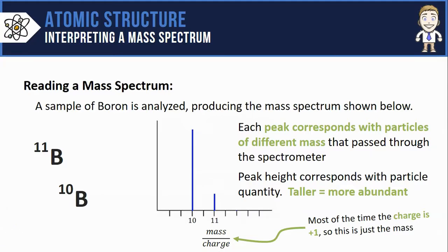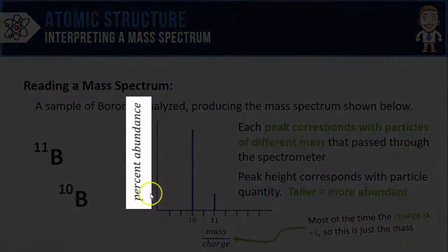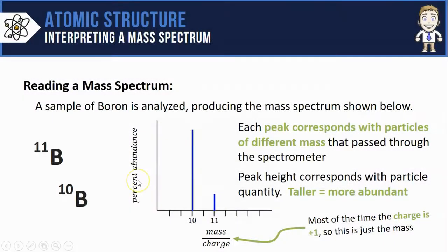This mass spectrum in particular on the vertical axis graphs something called percent abundance. That means not only do I know boron-10 is taller and more abundant, I can follow the height of that peak over to the vertical axis and look up that those boron-10s made up 81.3% of all the atoms in the sample. The boron-11s made up the other 18.7%.